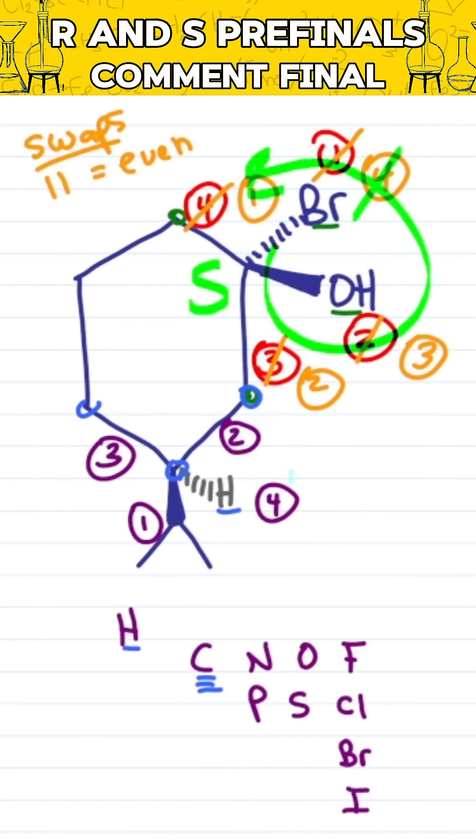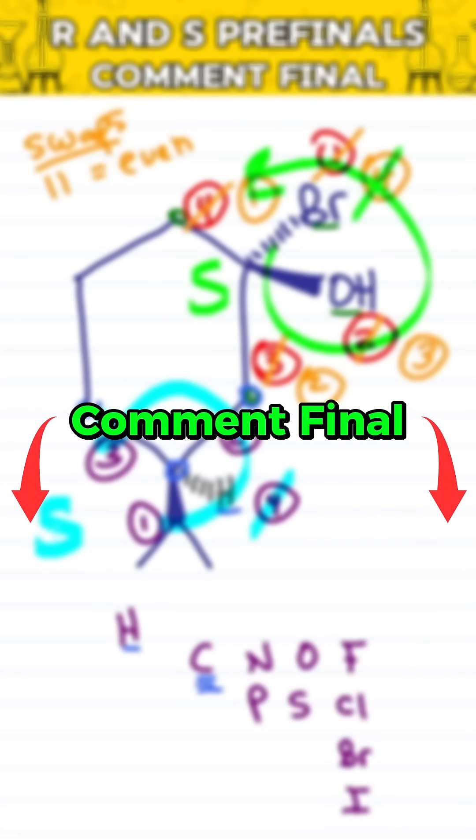Number four is already in the back, so we cross it out, trace from one to two to three, and I get another S. Comment final below for even more practice before your final exam.